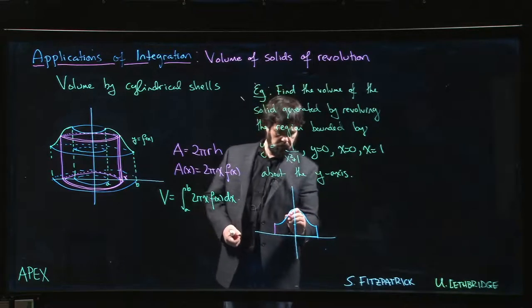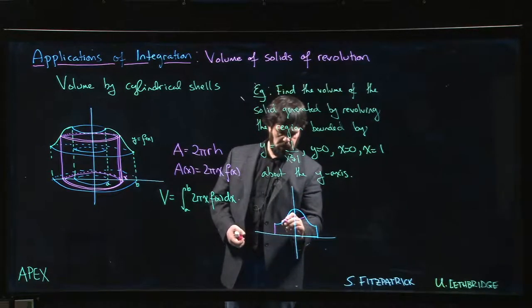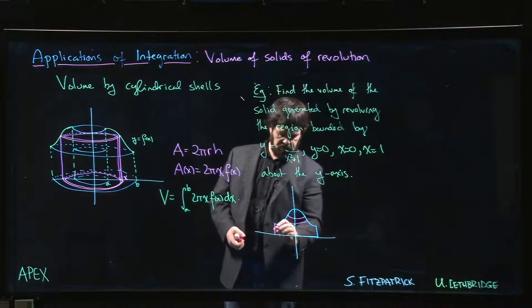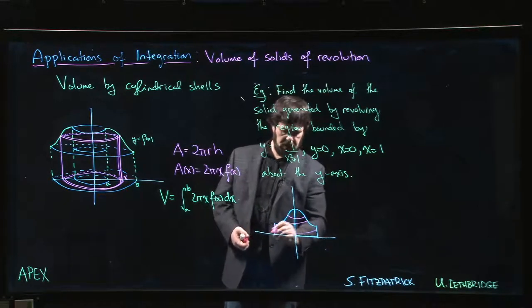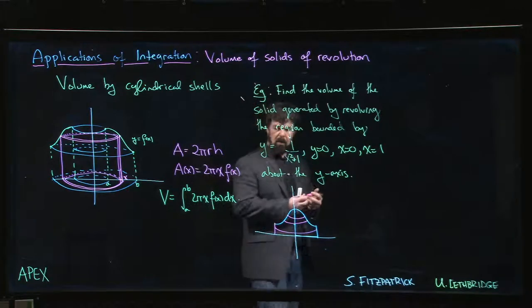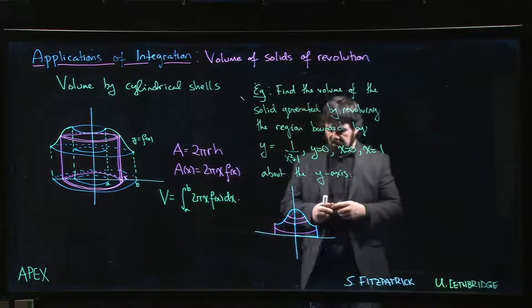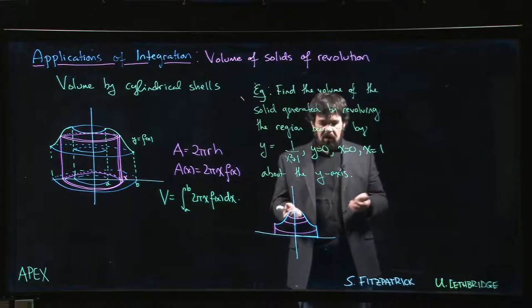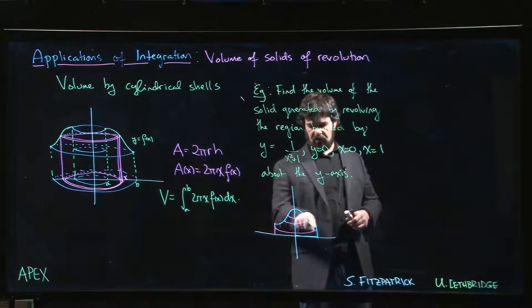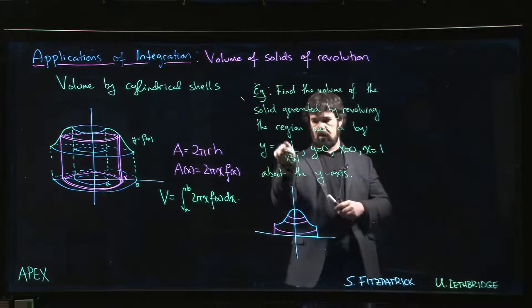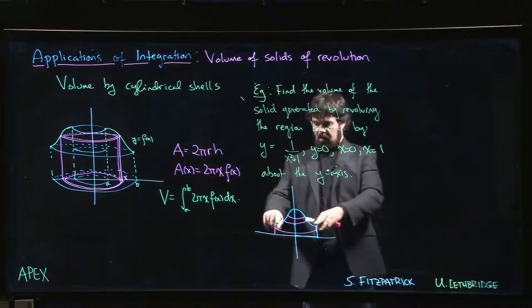Now we could, of course, do disks. There's nothing stopping us from doing disks for this particular region. If we revolve that around, we could do it via disks, only thing is we'd have to use for y going from 0 to—this is one half here—if x is equal to 1, y is going to be a half.